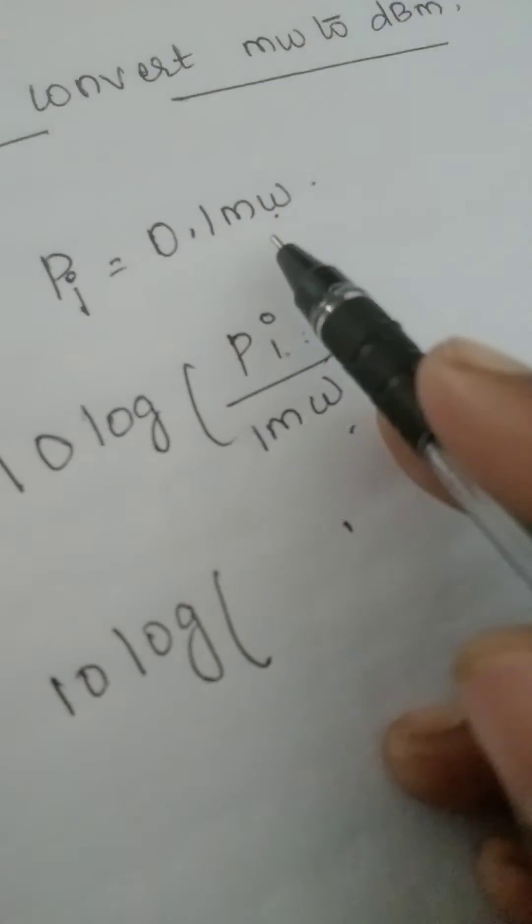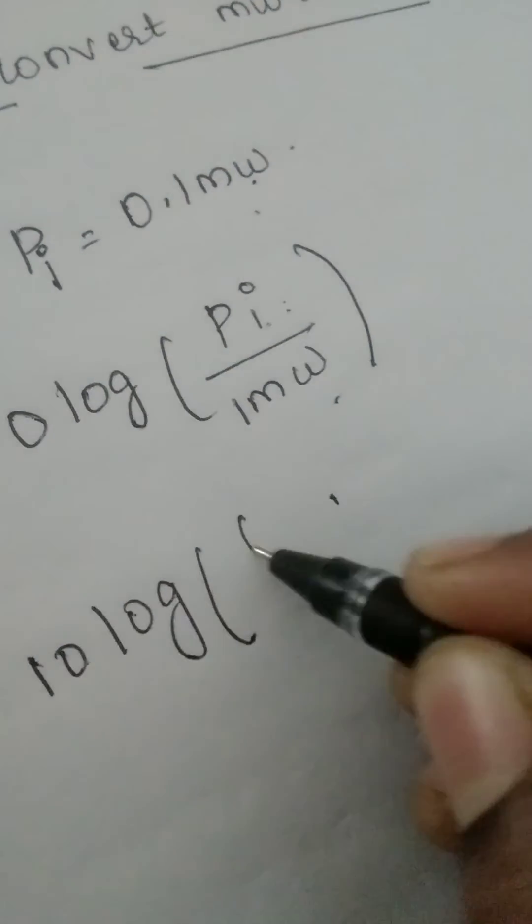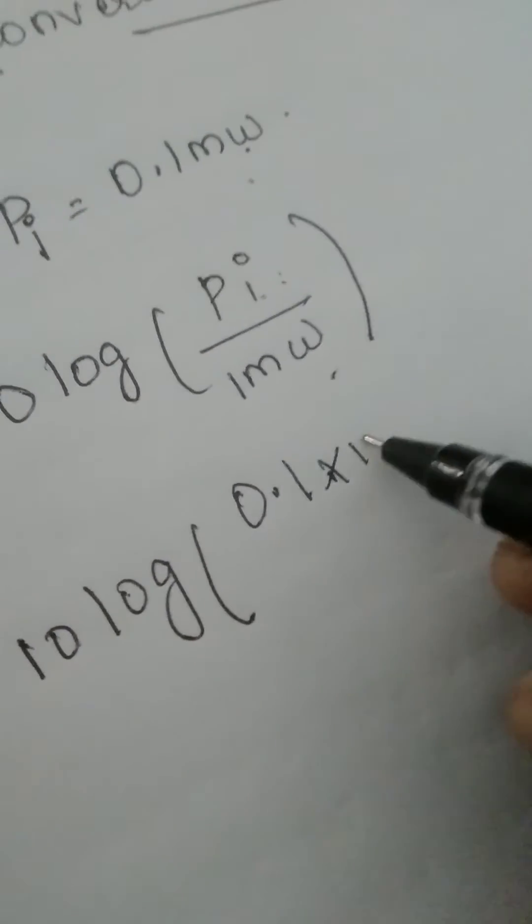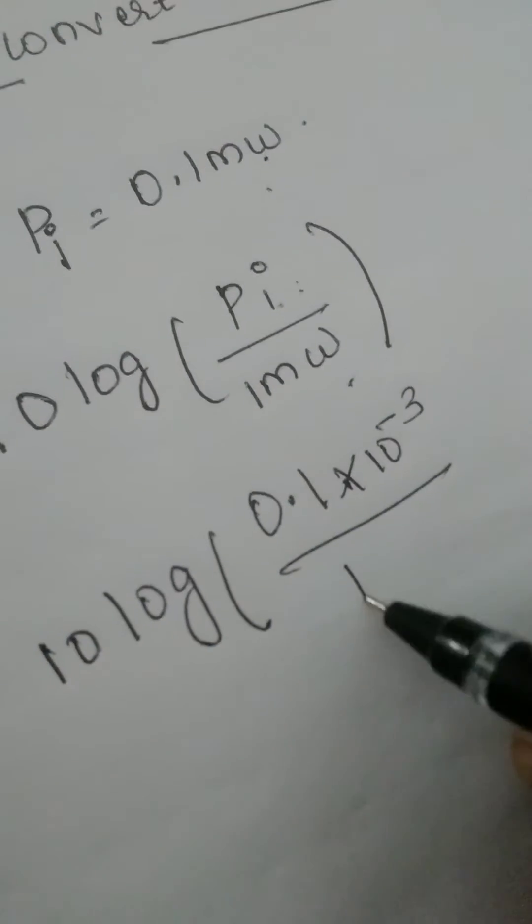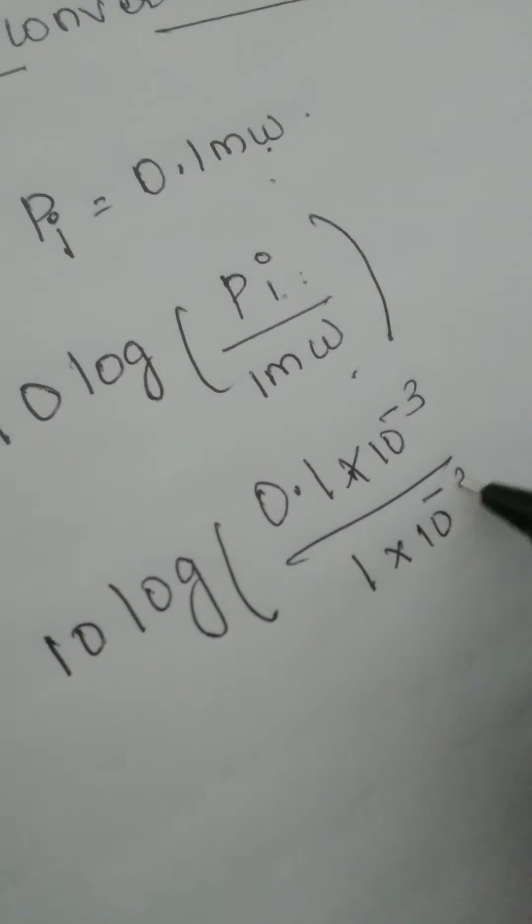So here for example, we have taken P i equal to 0.1 milliwatt. 0.1 into 10 to the power of minus 3 divided by 1 into 10 to the power of minus 3.